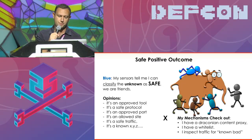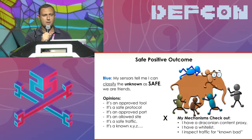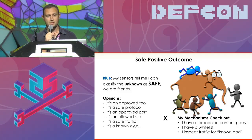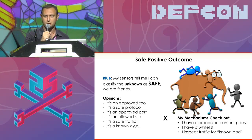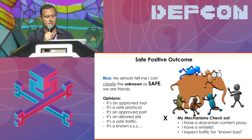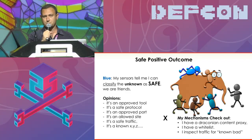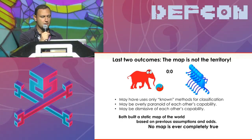The safe positive outcome from your move is that you literally try to play towards what is being discovered. What are the rules? Can you be an approved tool? Can you communicate over a safe protocol? Is there an approved port you can use to do your job? Are you in safe traffic? The blue team says their mechanisms are okay because they have a draconian content proxy and a whitelist — they're just checking for known bad. Pretty good, right?